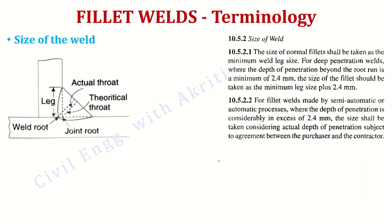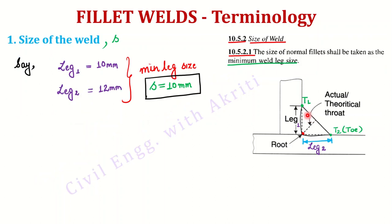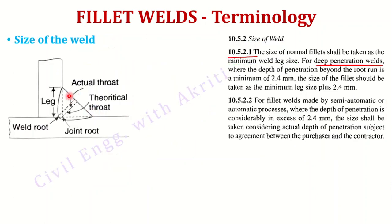The same clause 10.5.2.1 says that for deep penetration welds — if you look at this particular figure, the weld line, the black dotted line, is far deeper. In the previous figure, the member was almost coinciding with it, but here the dotted line is far too deep. This is called deep penetration welds.